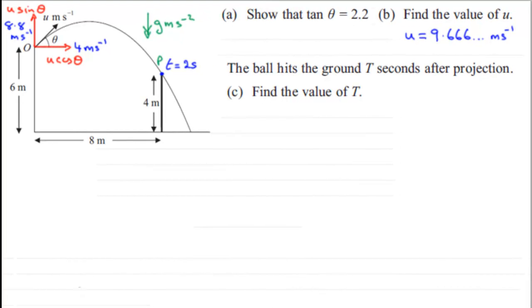Hi. Now in this next part, part C of the question, we're told that the ball hits the ground T seconds after projection, and we've got to find the value of T. So essentially the ball hits the ground here when our time t equals big T. You'll notice I've written down the answer we established in part B. U equals 9.666 meters per second.